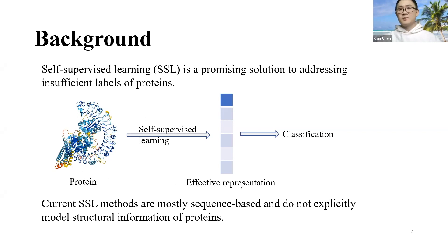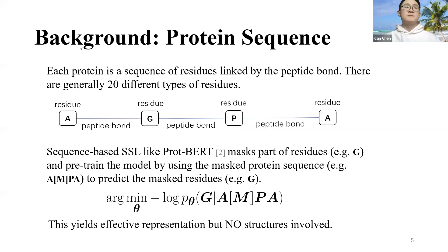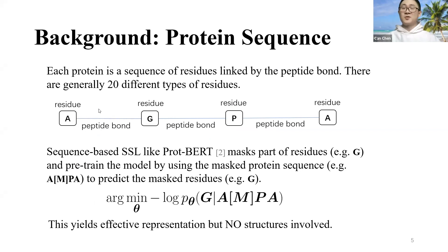Generally, given a protein, self-supervised learning can yield an effective representation. Based on this representation we can perform downstream tasks such as classification and regression. Current self-supervised learning methods are mostly sequence-based and do not explicitly model the structure of proteins. Each protein is a sequence of residues linked by peptide bonds, with generally 20 different types of residues.